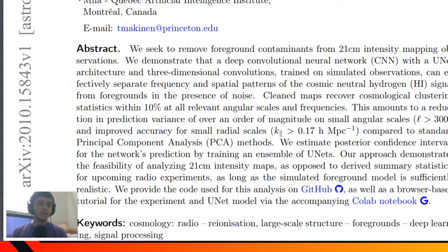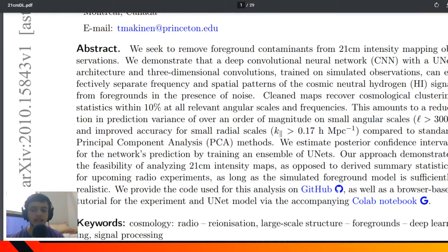They compared it with Principal Component Analysis, which is very standard in linear algebra. You reduce the number of independent components and see if you're having a normal representation of the data. They use U-Net neural network, a U-Net architecture of convolutional neural network, which has been gaining prominence in astronomy.